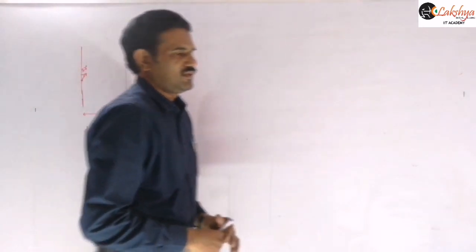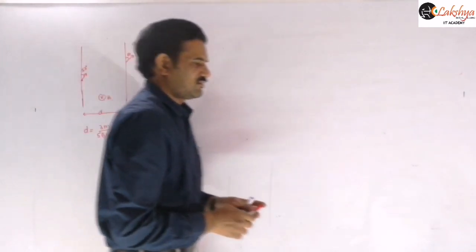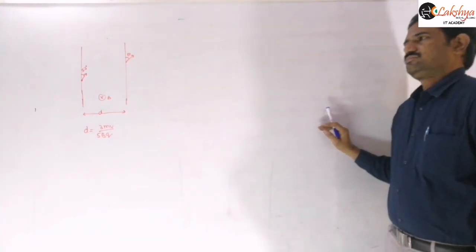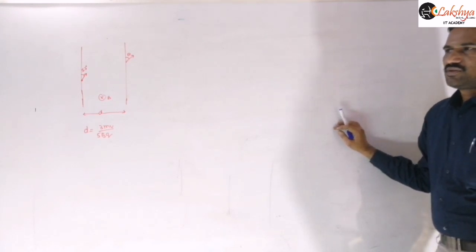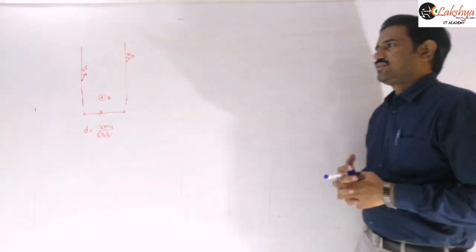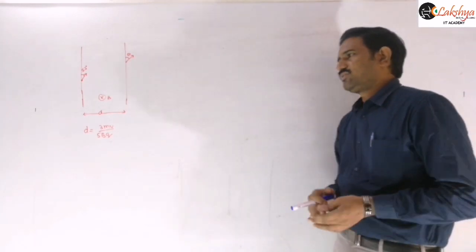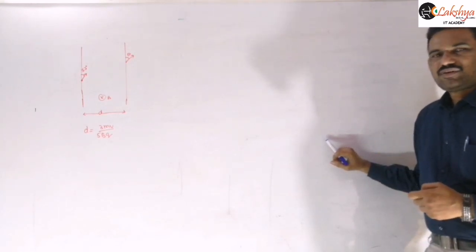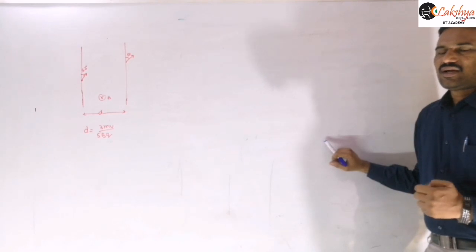Problem data: a charged particle of charge q and mass m enters the magnetic field with speed v, making an angle of 53° with the boundary. The width of the magnetic field is d = 3mv/(5Bq). Find the angle θ shown in the figure.